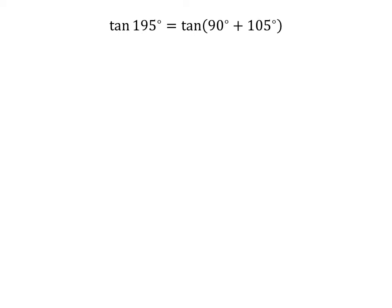195 degrees is equal to 90 degrees plus 105 degrees. So, tangent of 195 degrees is equal to tangent of 90 degrees plus 105 degrees. We know the trigonometry identity: tangent of 90 degrees plus A is equal to minus cotangent of A.